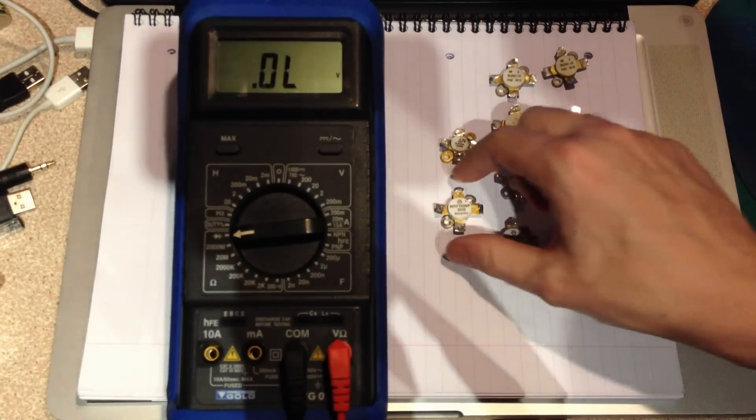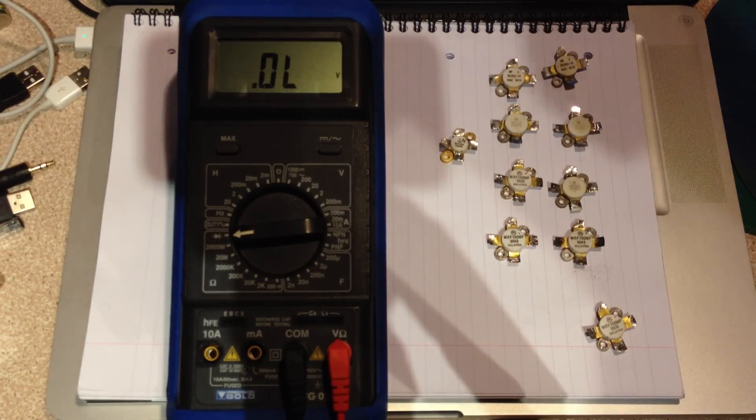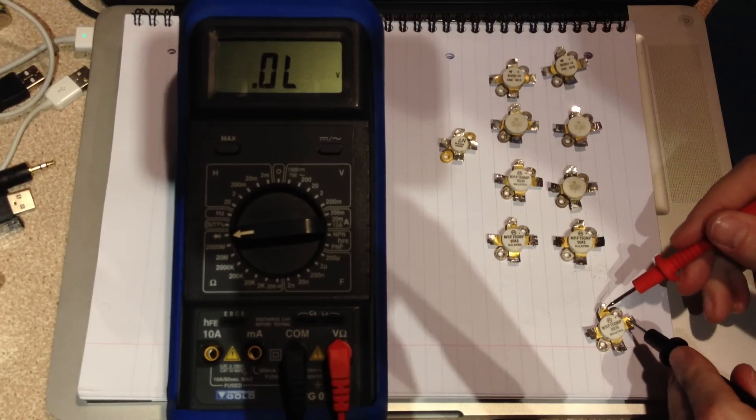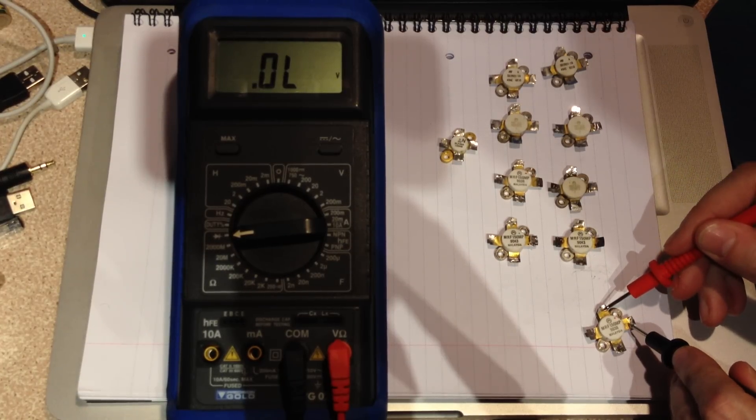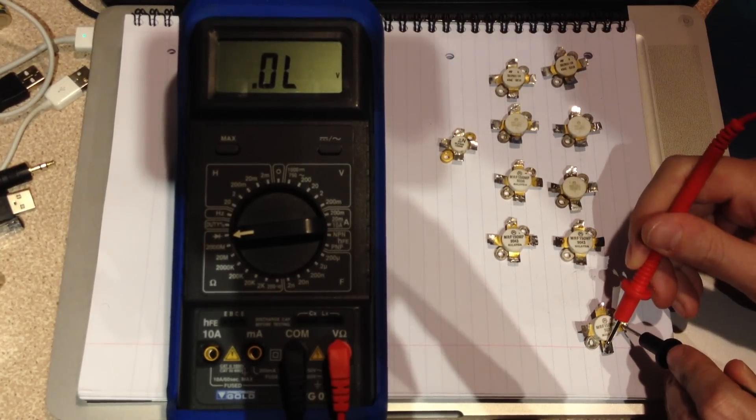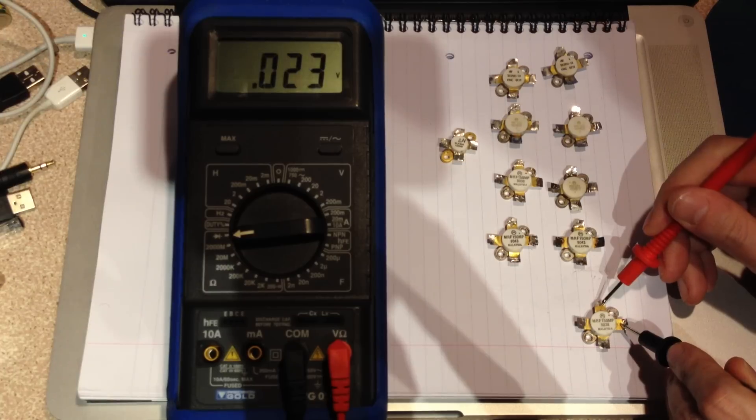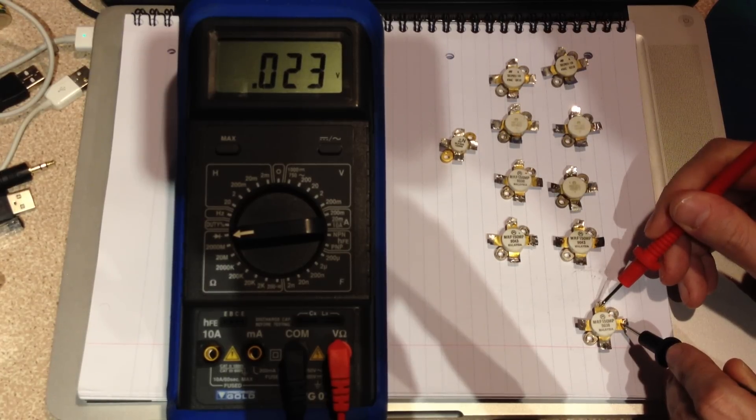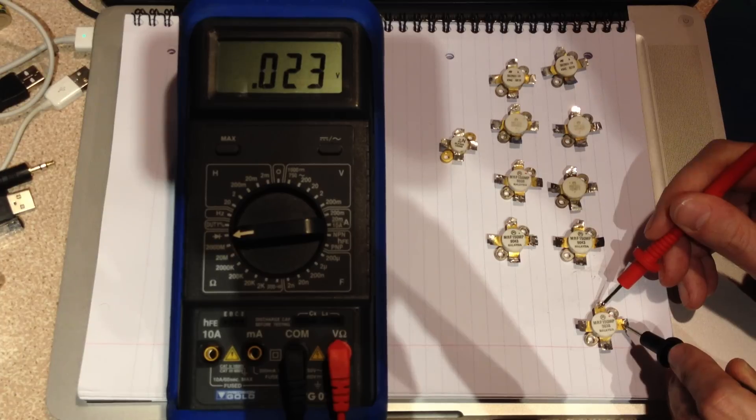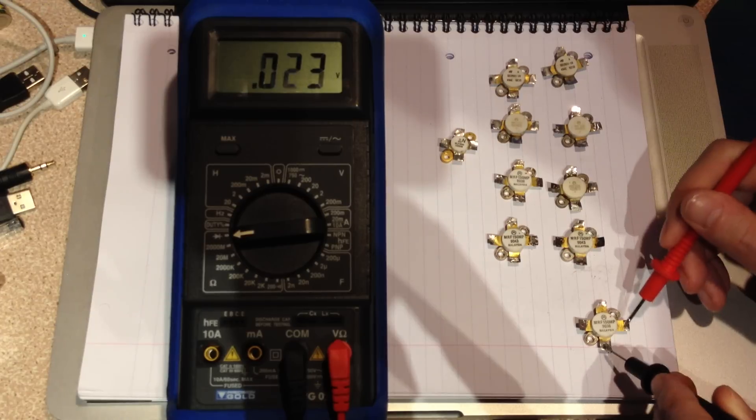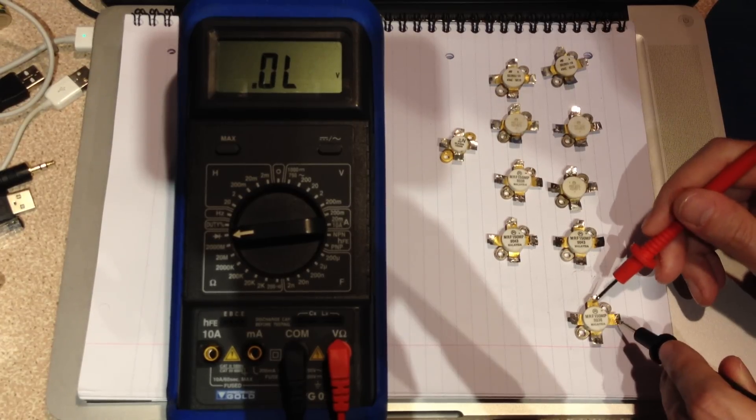There is one that's slightly faulty, this MRF-150 here. There it's off. We can charge the gate. And it doesn't give me a great value. It's quite a high resistance. It's on, but it's not on as it should be.